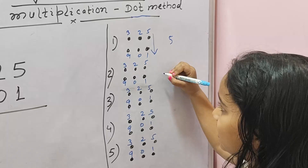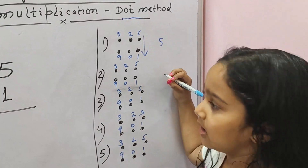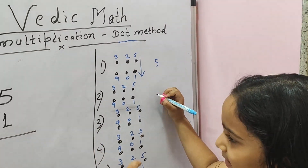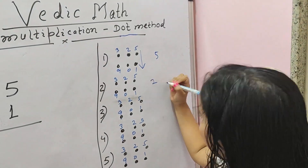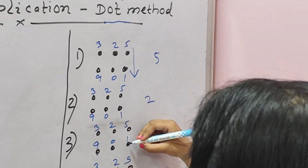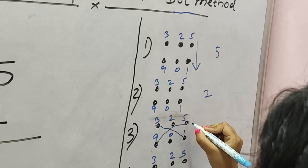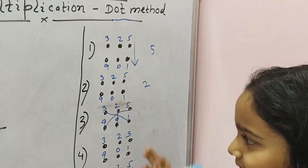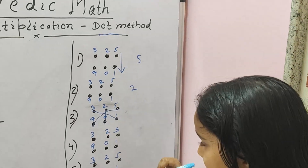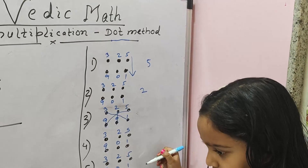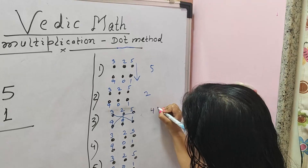The second step is we do a cross: 2 times 1 plus 5 times 0 is 2 plus 0, which is 2. We write 2. Now the third step is to do like a star pattern. So 1 times 3 is 3, plus 9 times 5 is 45, giving 48, plus 0 times 2 is 0, which equals 48. That's a carry forward of 4.